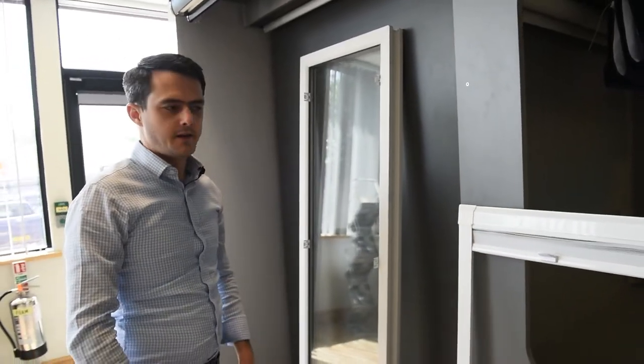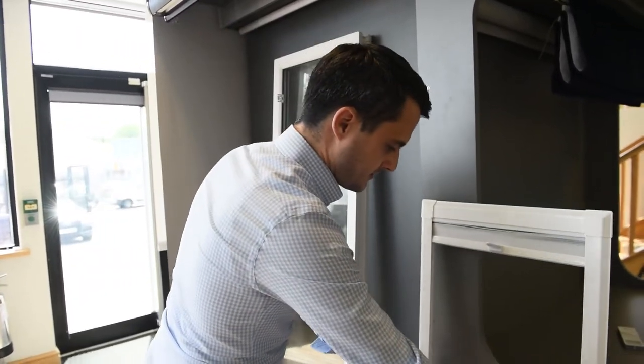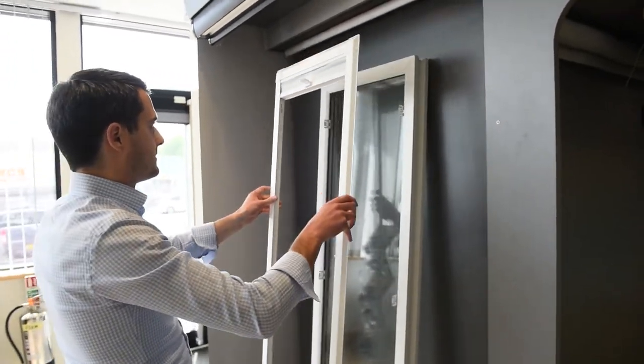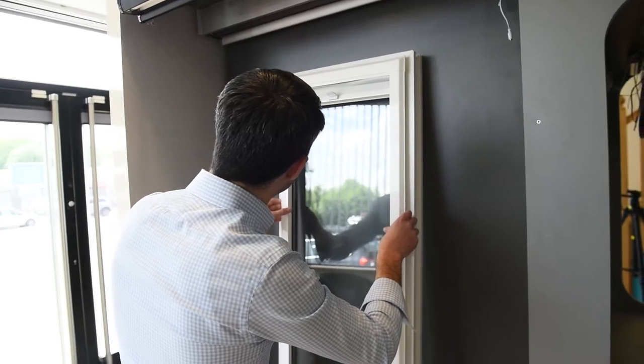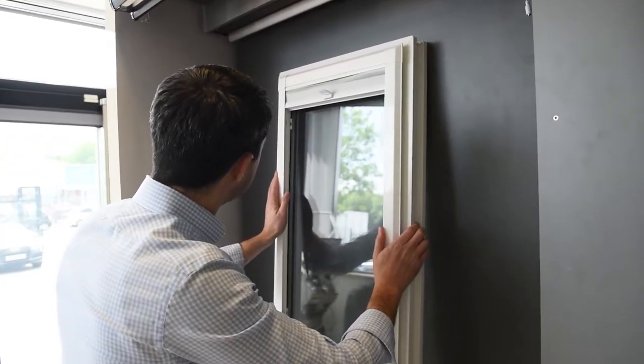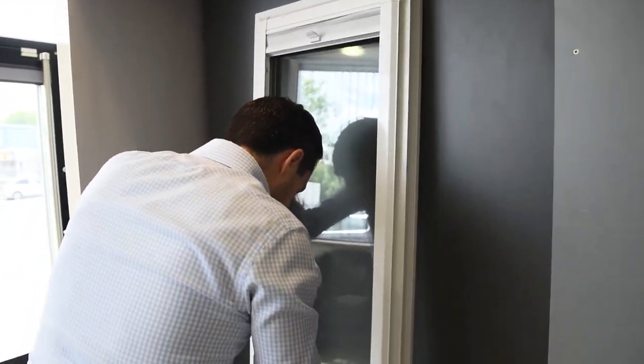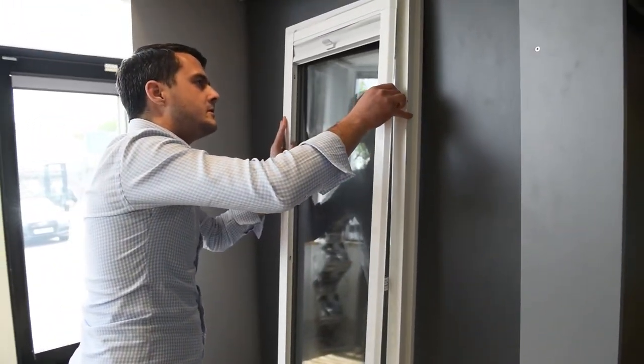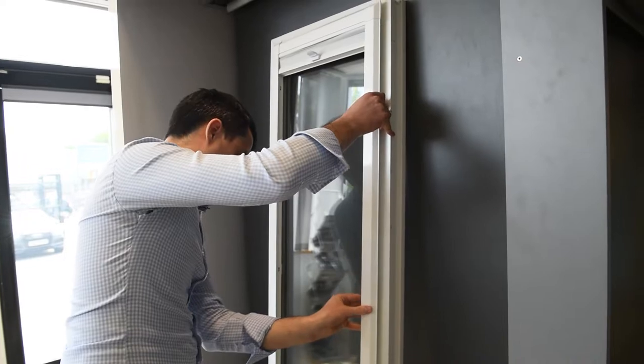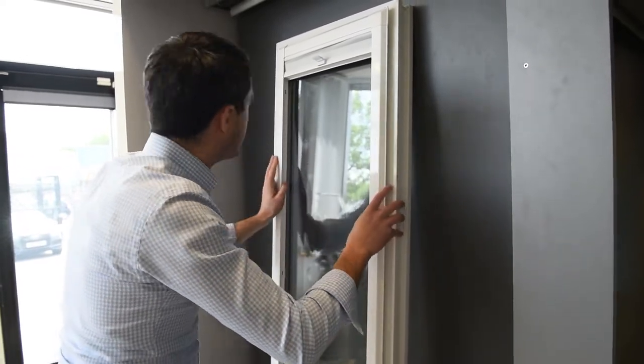Okay, so then the next step is to take our blind and if we line it up with the brackets on both sides, make sure it's inside the brackets, and then just simply work around clipping the frame in.